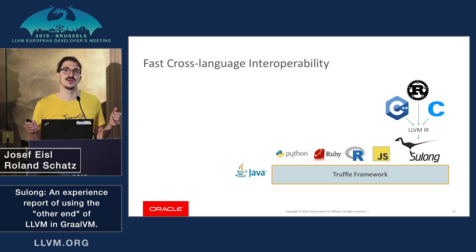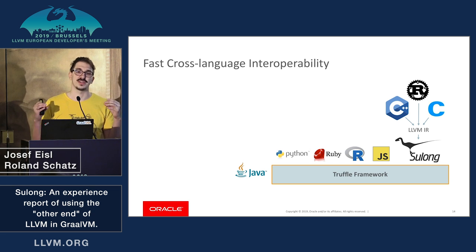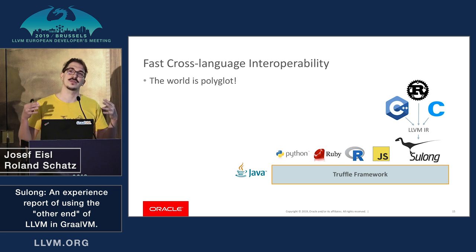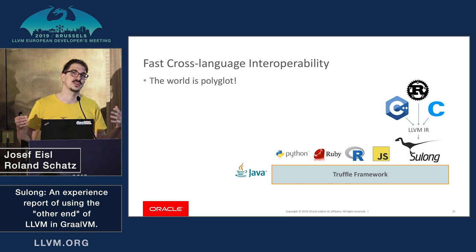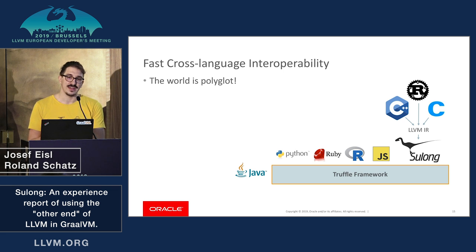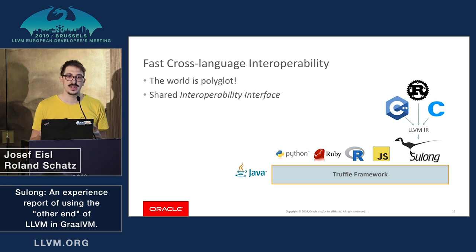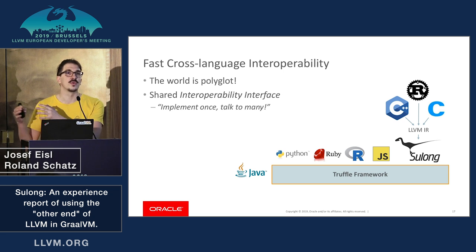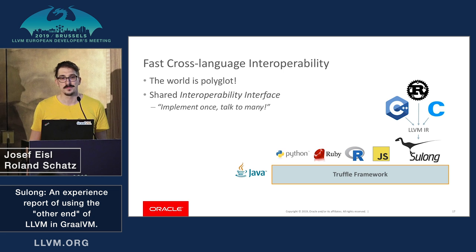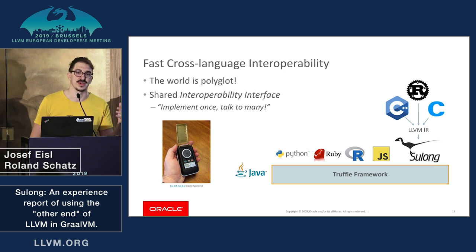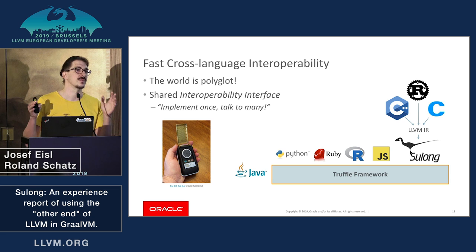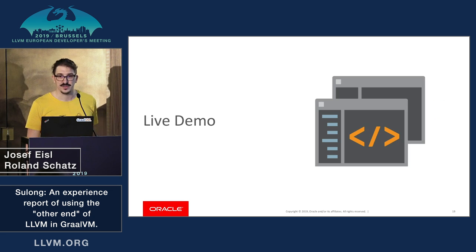So what's the advantage of having all those languages on one implementation framework? The advantage is that all languages can talk with each other, and a lot of applications actually use more than one language. The nice feature about Truffle is that it defines a shared interoperability interface — you need to implement this interface only once and you can talk to all other languages, even without knowing their semantics. It's kind of like the universal translator from Star Trek.